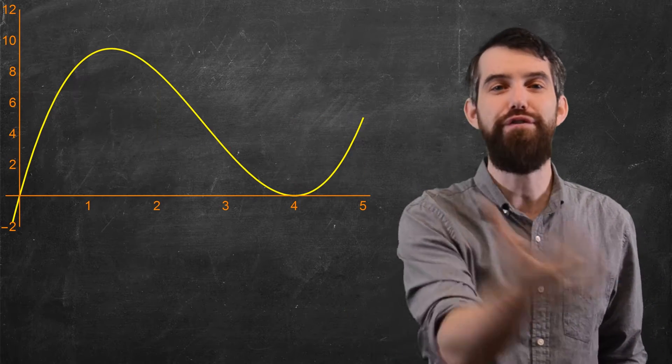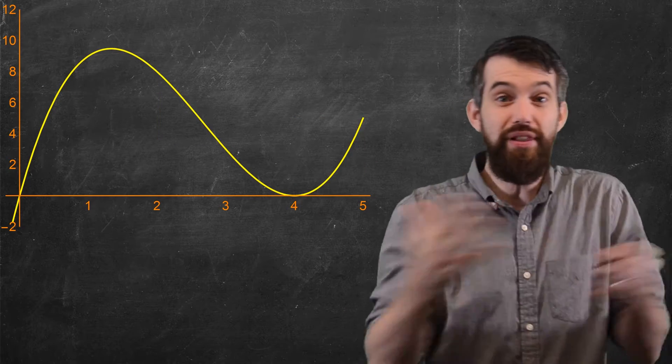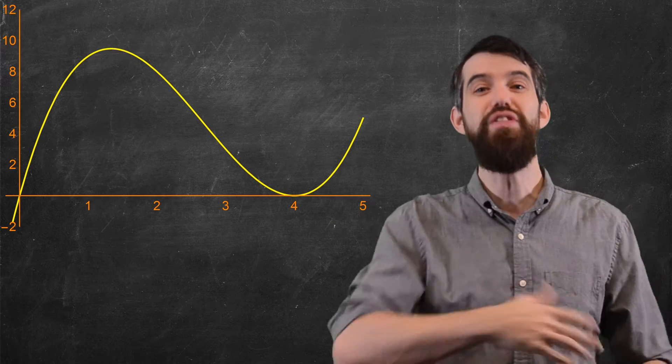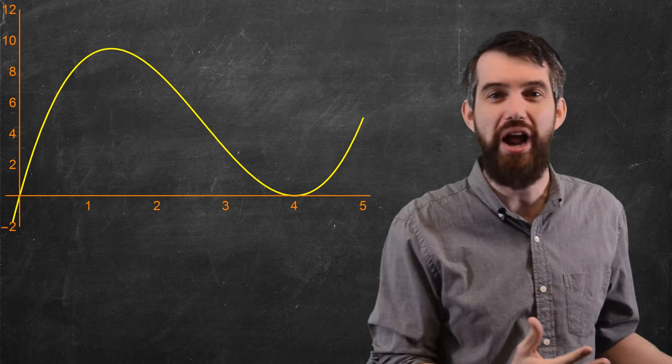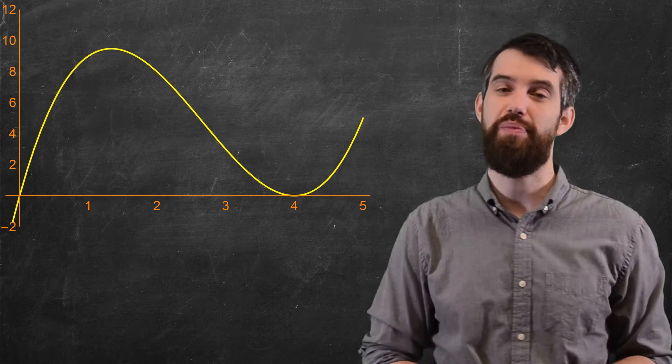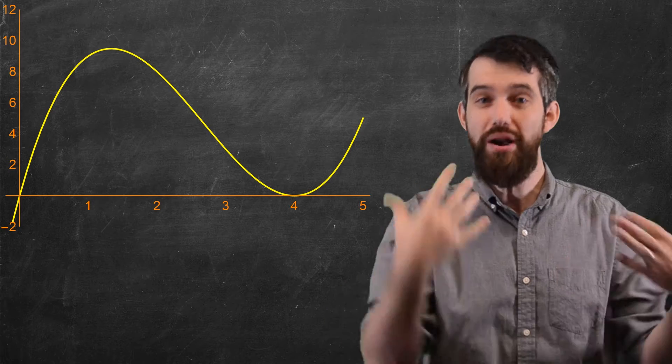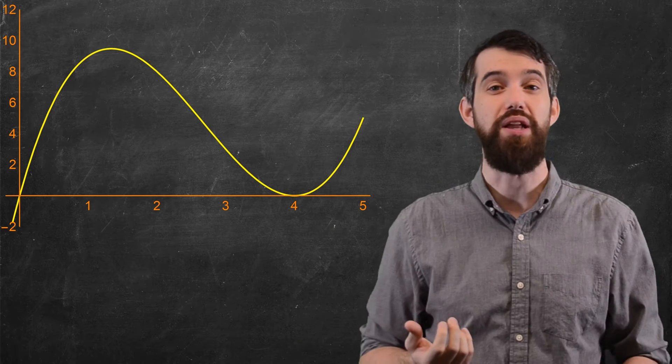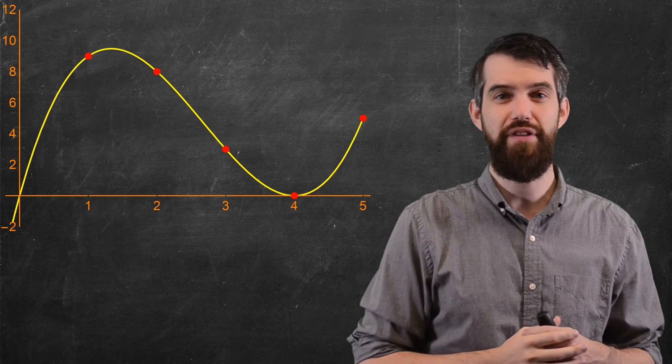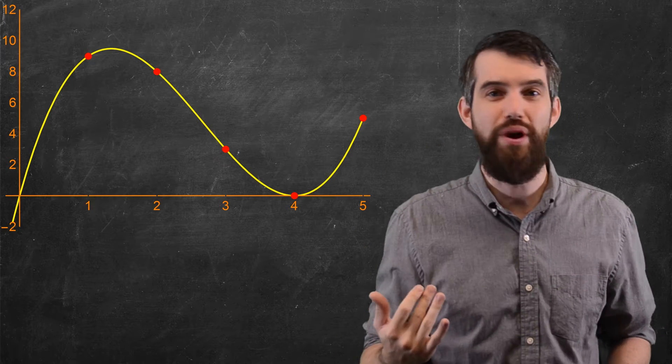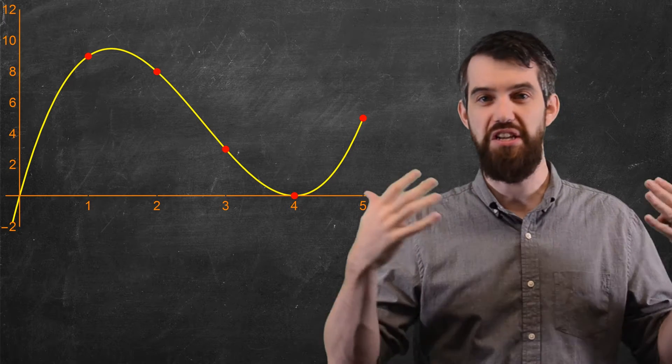But now let me turn to a function. So let's imagine that instead of a list of numbers, I have a function, which is sort of a continuum of a bunch of different numbers. How could I define and compute the average of something like that? Well, one thing I could do is I could approximate this with just a bunch of points. So for instance, let me just put these points on this particular graph, and the y values of those points are the same 9, 8, 3, 0, 5 we've seen before.